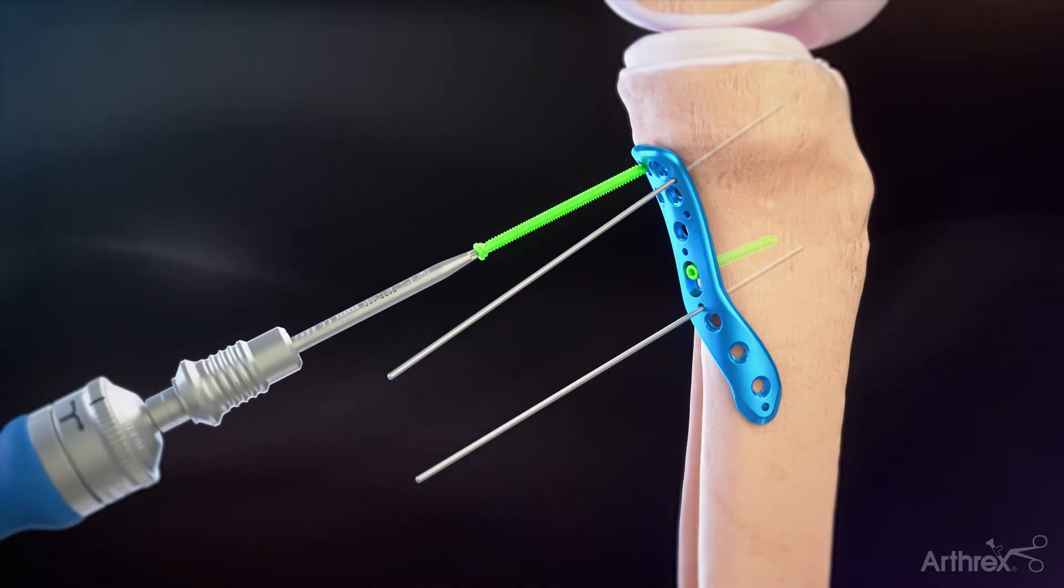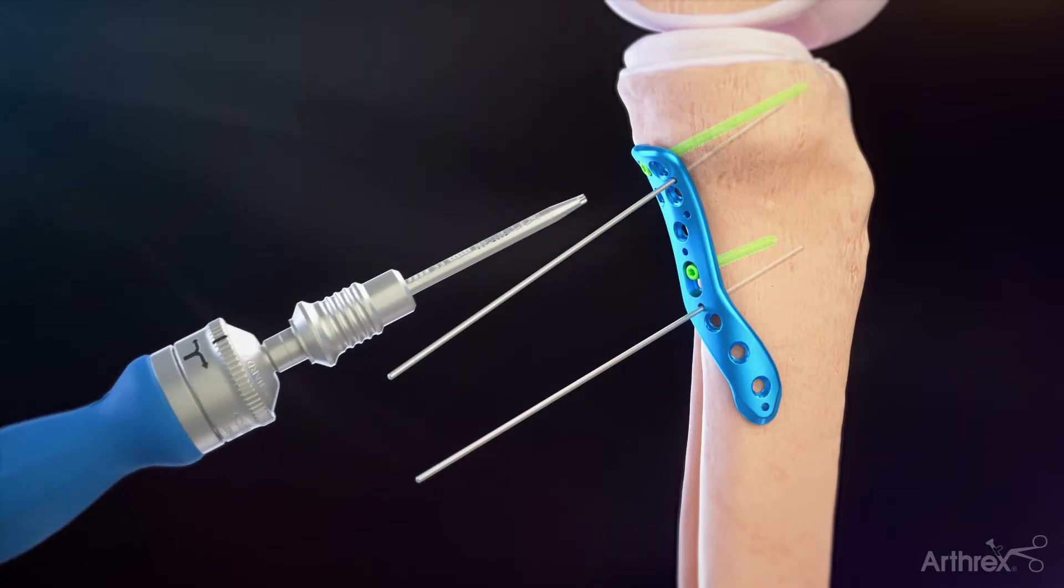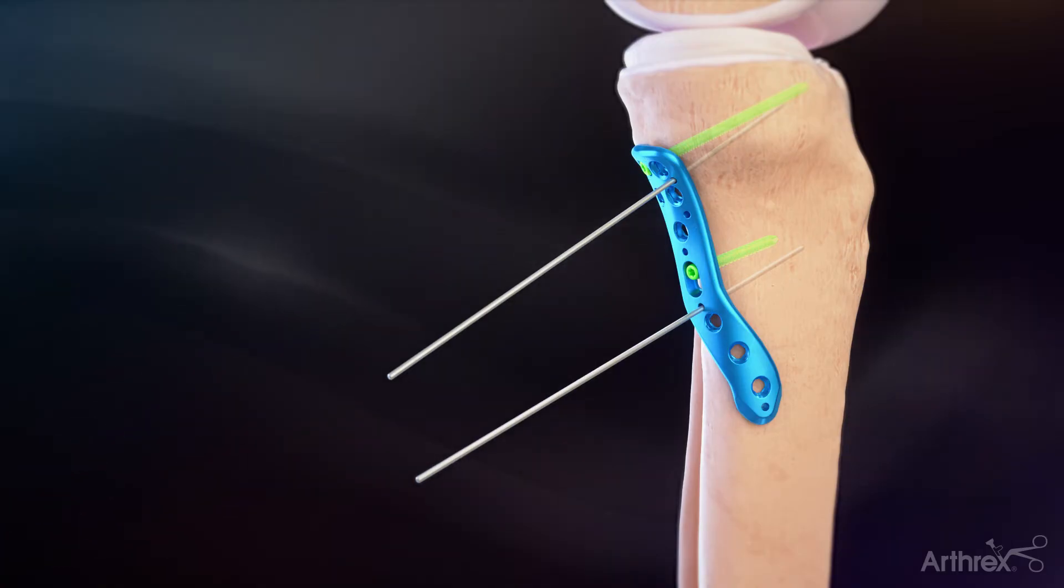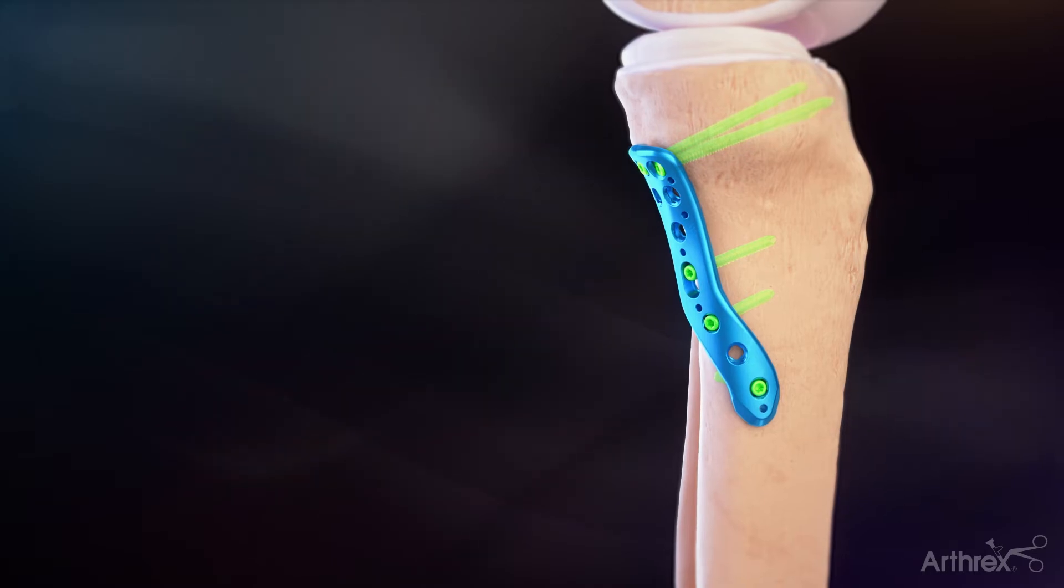Insert the selected screw on a T10 driver. The AO ratcheting torque limiting handle or AO powered torque limiting adapter is recommended for the locking screws. Add additional screws as necessary.